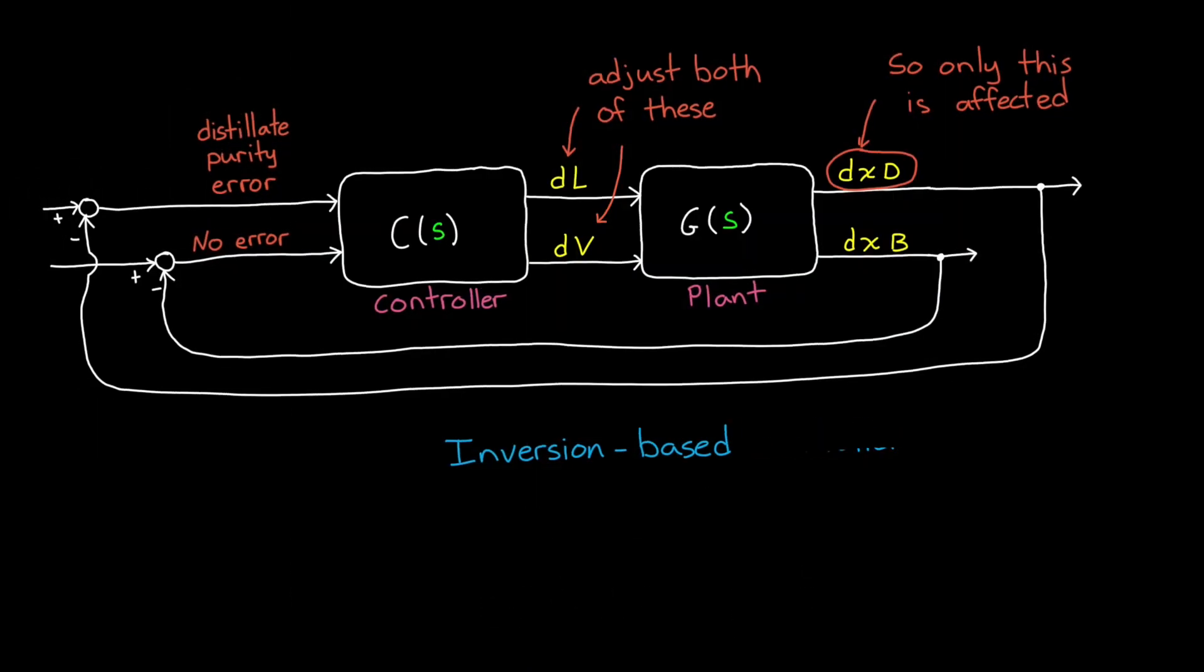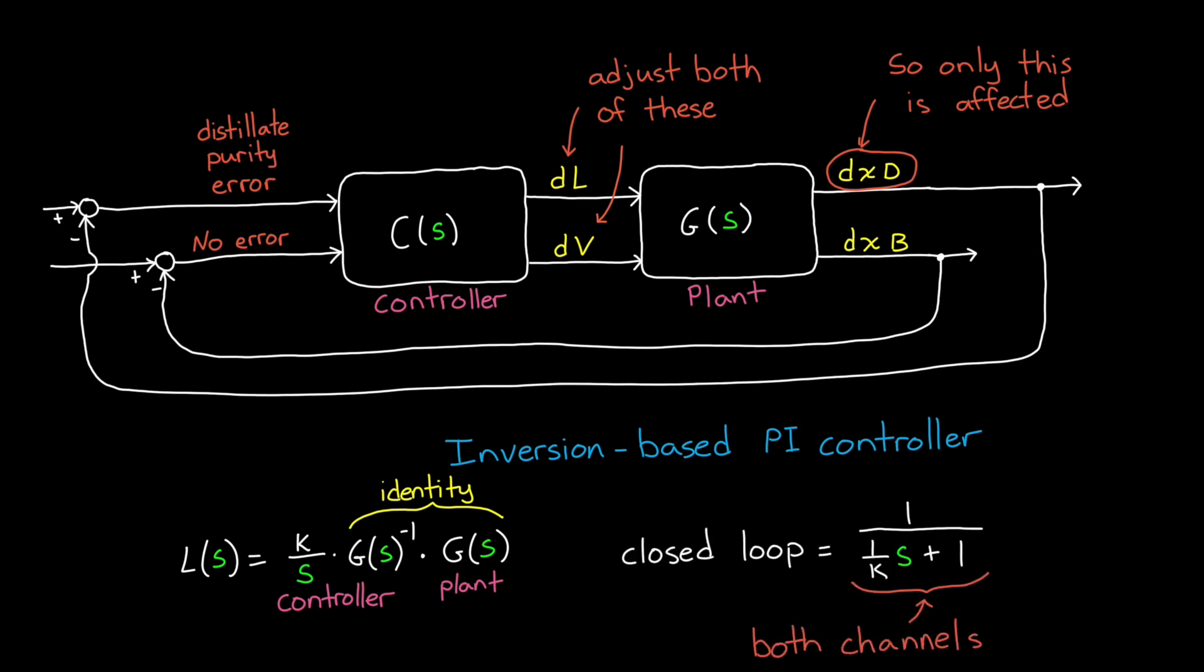So, let's review what we've just created. We have the plant G, and we created a controller K over S times G inverse. And G inverse times G produces an identity, so the open-loop system is equivalent to just a gain and an integrator. And the closed-loop system for both channels behaves like a first-order response with time constant 1 over K. So, we can choose K to affect the speed of the response, and this is going to be pretty awesome.